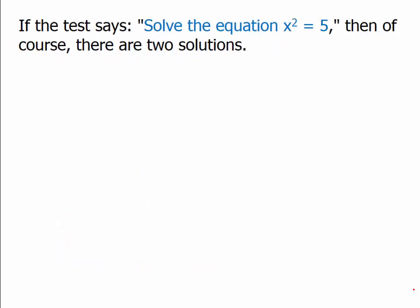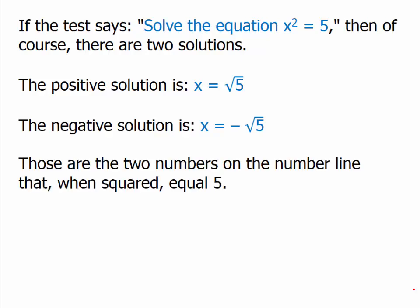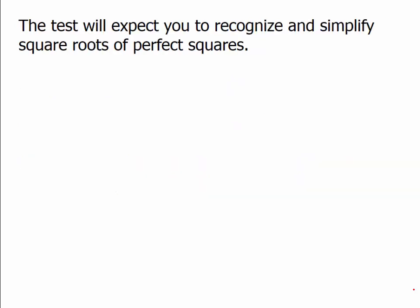If the test says solve the equation x squared equals 5, there are two solutions. The positive solution is x equals root 5. The negative solution is x equals negative root 5. Those are the two numbers on the number line that, when squared, equal 5. They're symmetrical around 0, and by definition, when we square them, we get 5.